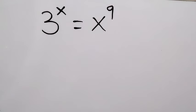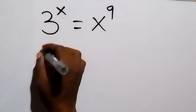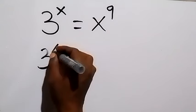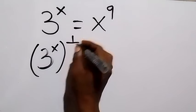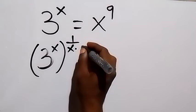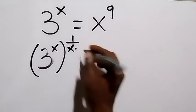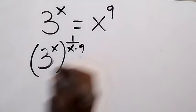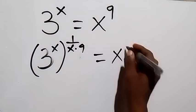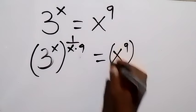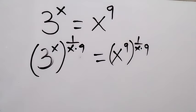From here, let's multiply both powers by 1 over x times 9. So we have 3 raised to power x, then raised to power — we multiply by 1 over x times 9 on both sides. On this side we have this, then equals on this side as well.